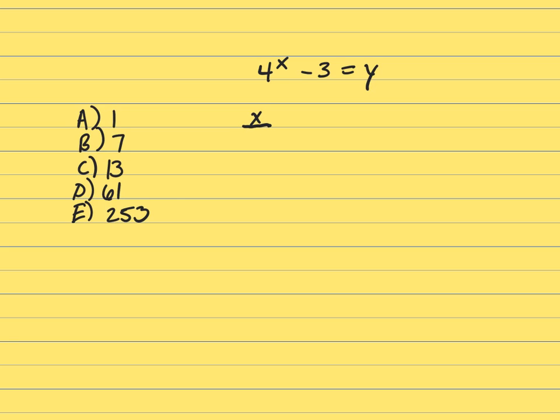So x is a positive integer. Let's start with your first positive integer, which is 1. So 4 to the 1 minus 3 is 1. Well, that's answer A.